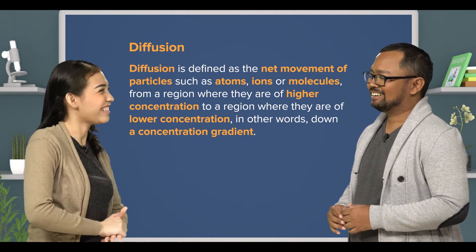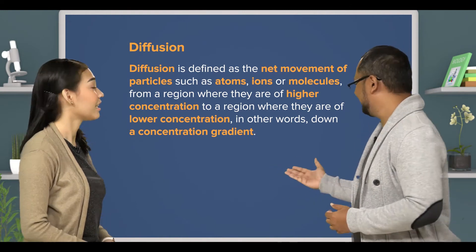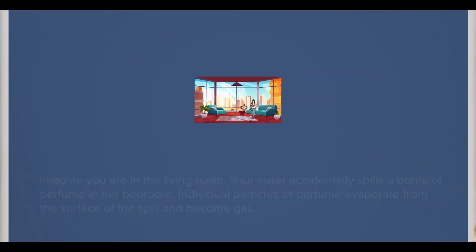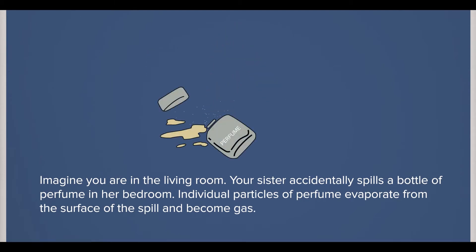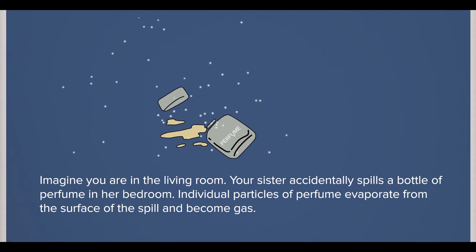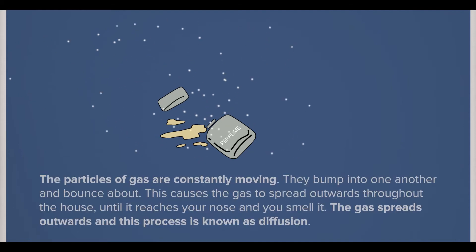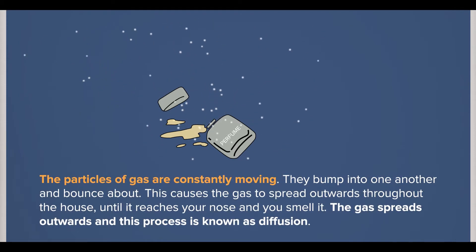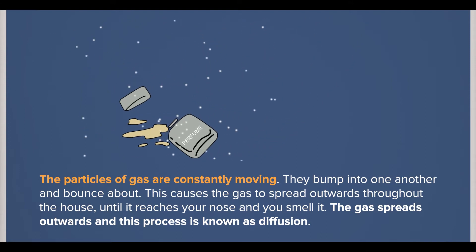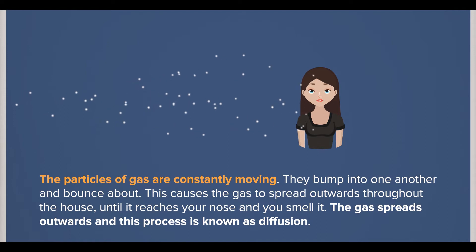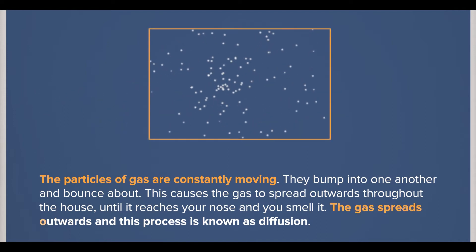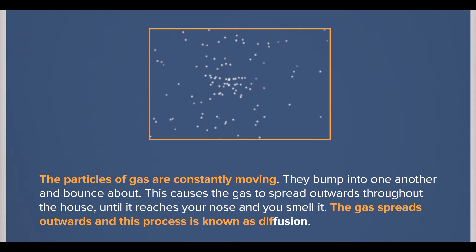I don't really understand. Okay, let's consider this. Imagine you are in the living room. Your sister accidentally spilled a bottle of perfume in her bedroom. Individual particles of perfume evaporate from the surface of the spill and become gas. The particles of gas are constantly moving — they bump into one another and bounce about. This causes the gas to spread outwards throughout the house until it reaches your nose and you smell it. This process is known as diffusion.